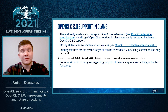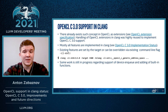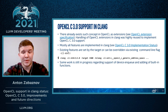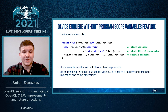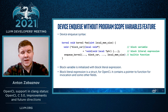Also, there already exists such a concept as extensions in OpenCL, and the current infrastructure for extensions has been highly reused to implement OpenCL C3 support. Some work is still in progress and relates to device and queue support.